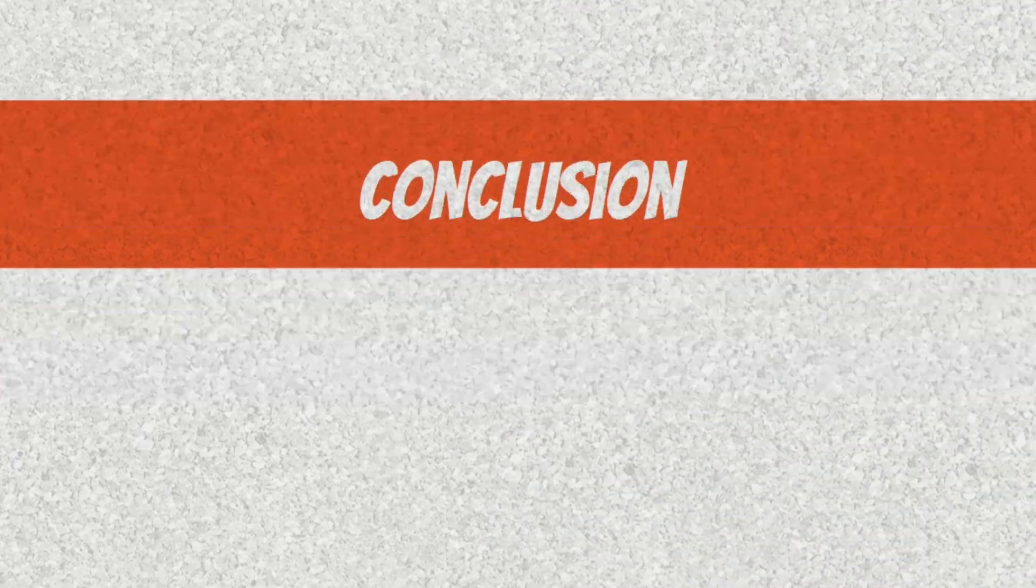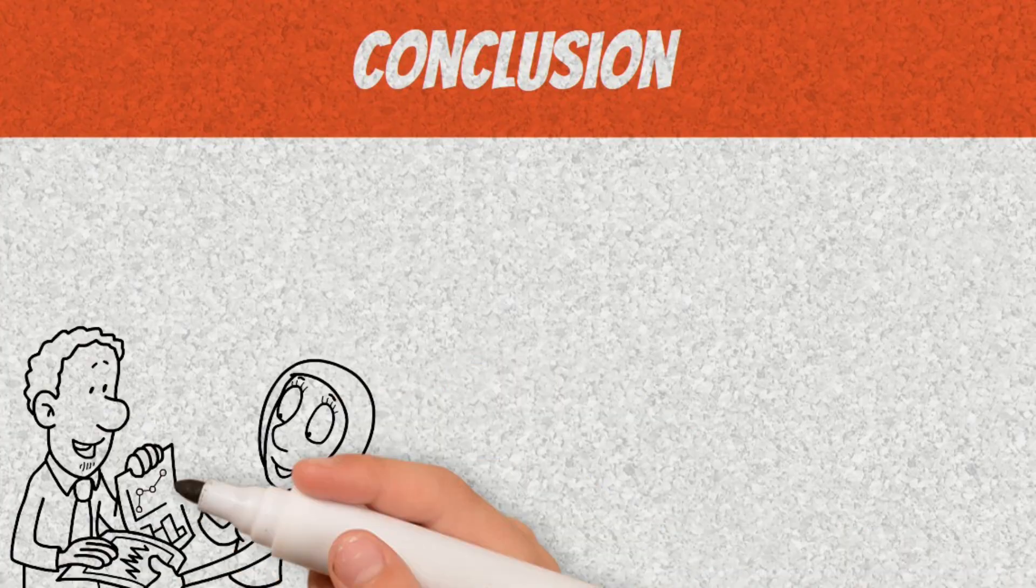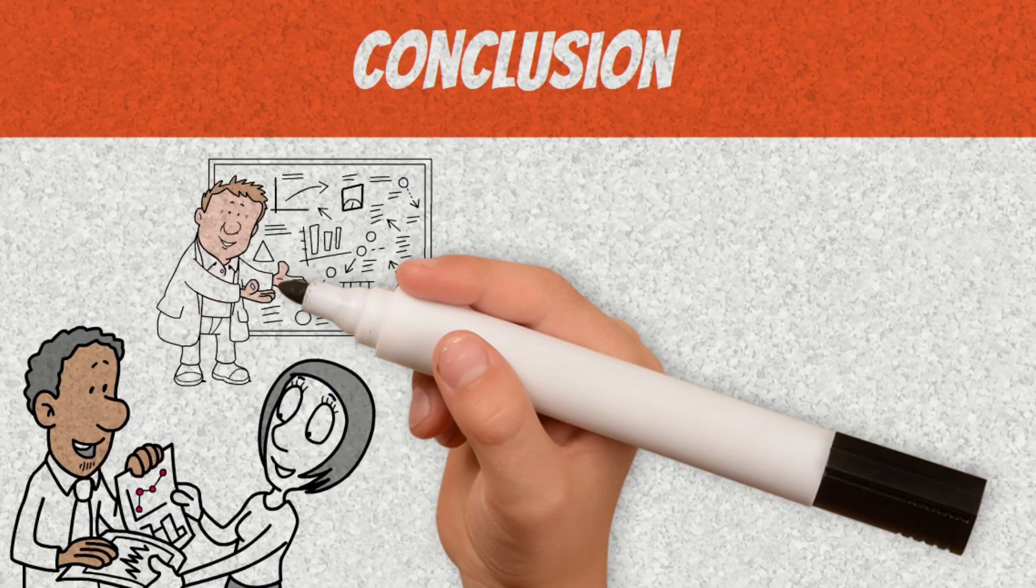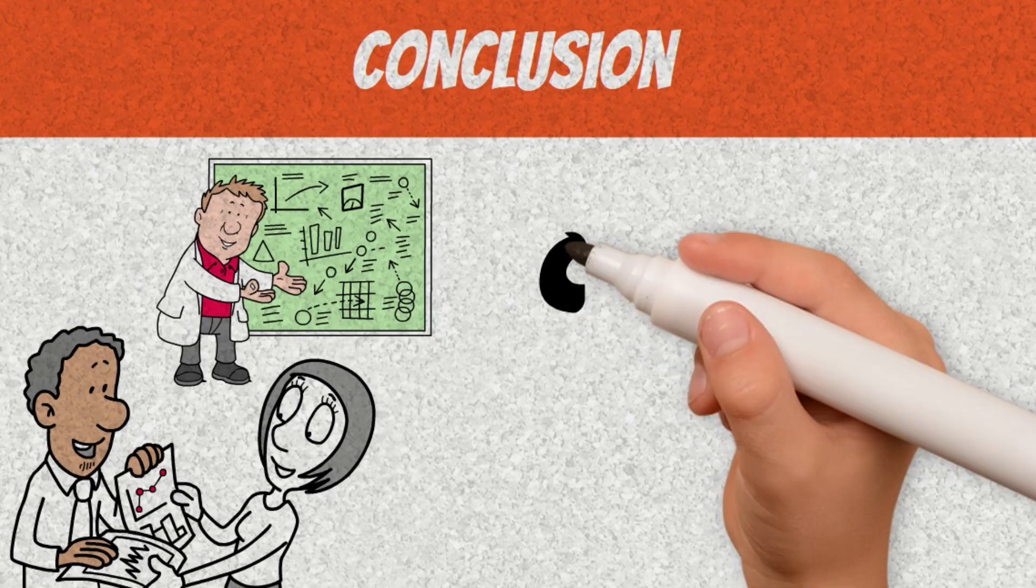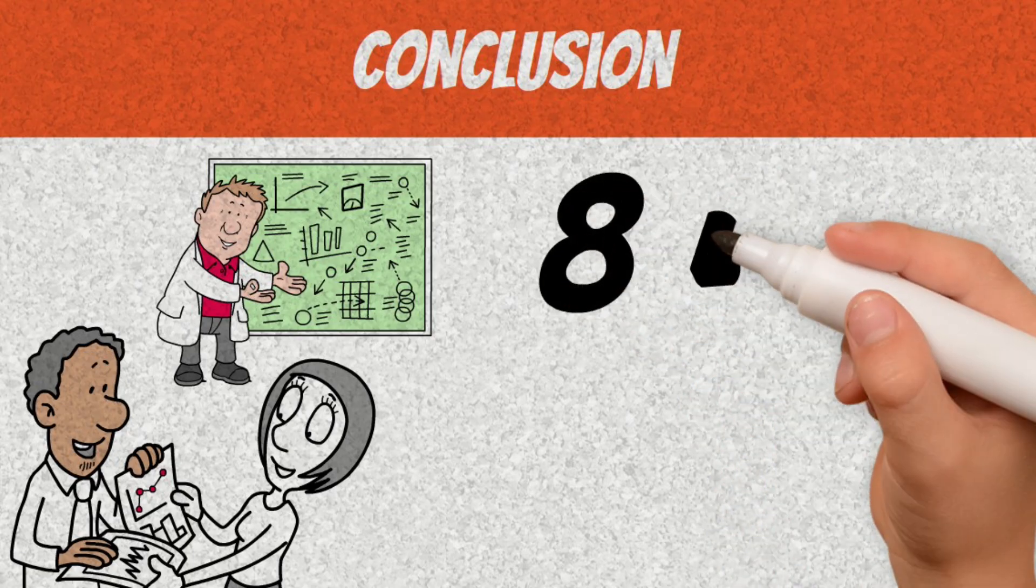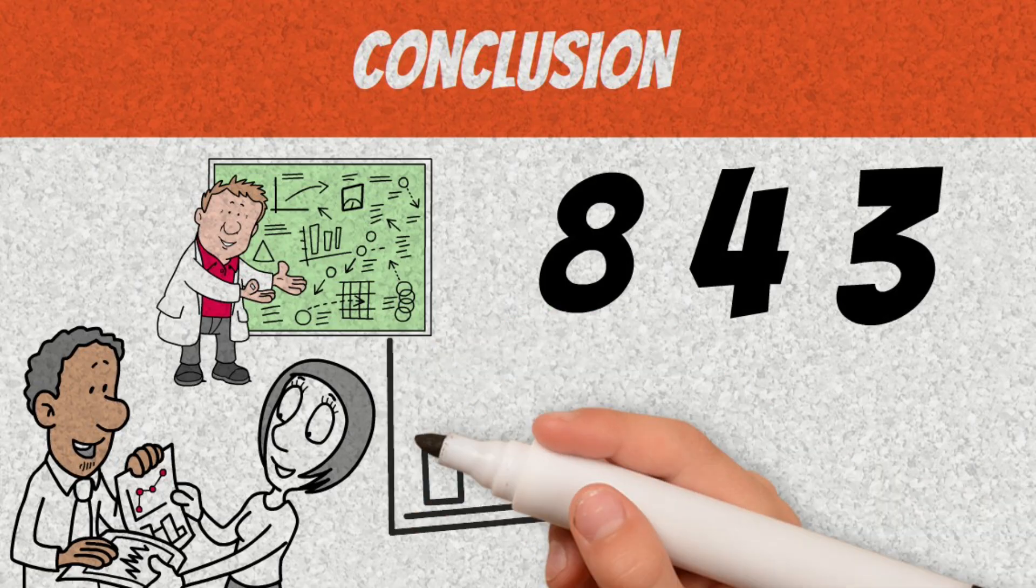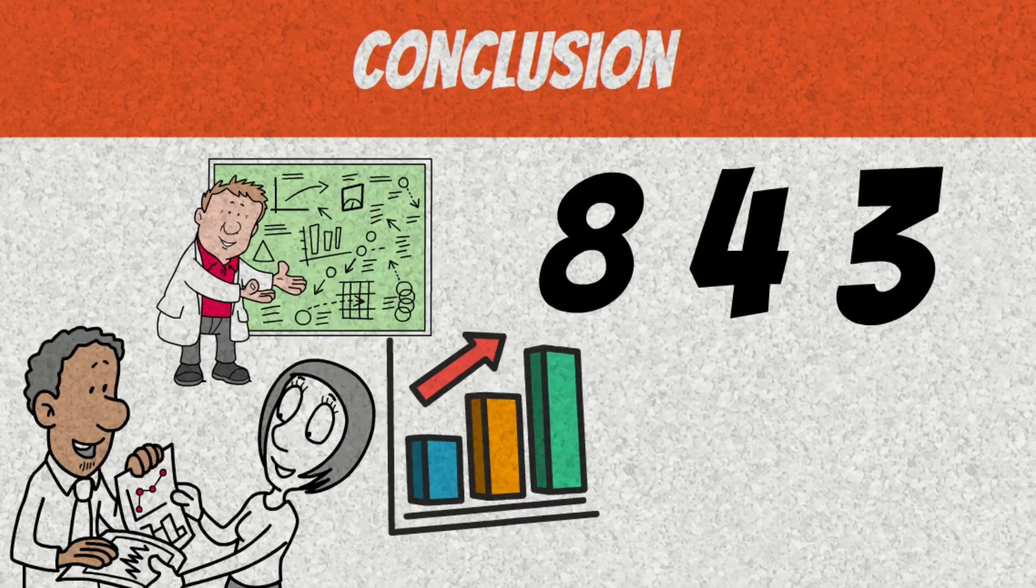Conclusion. Now you understand that the 8-4-3 rule is not just a concept, but a roadmap to shorten the time to your financial freedom. Starting with 8-year cycles, accelerating to 4, and then to 3, you transform slow, predictable growth into an exponential leap.